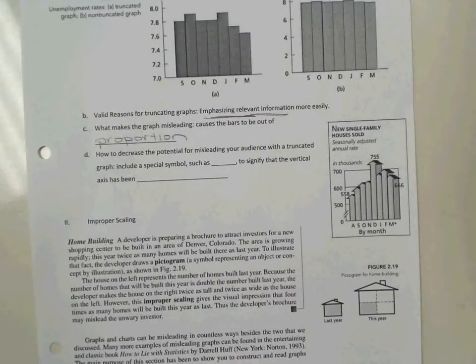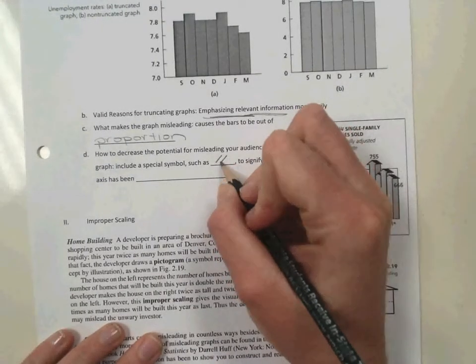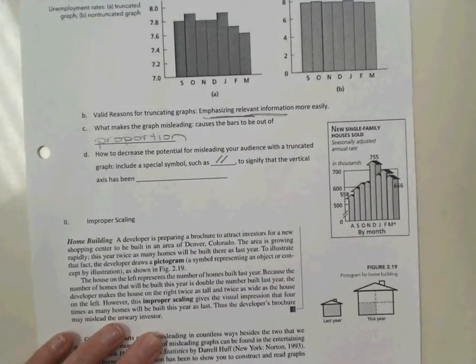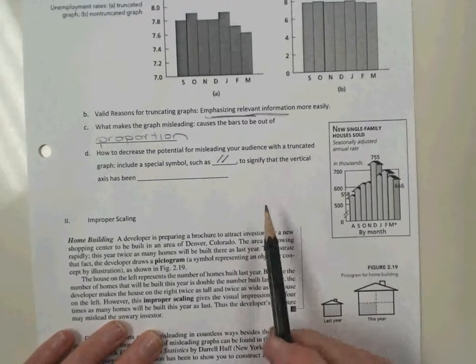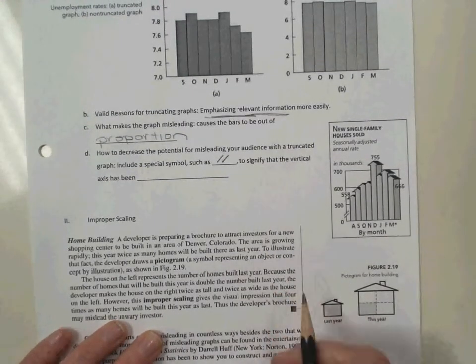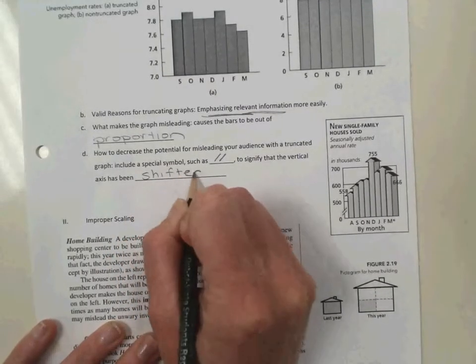How to decrease the potential for misleading your audience. You can use a truncated graph, but if you do, you need to use symbols such as the two forward slash marks that look like parallel lines to signify that the vertical axis has been shifted or truncated.